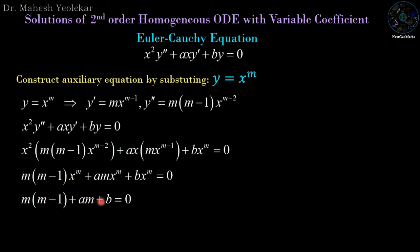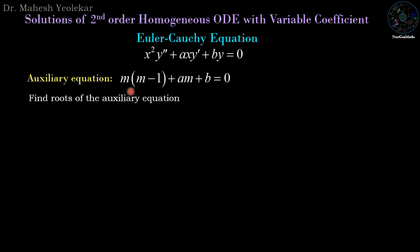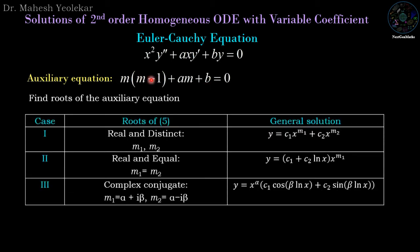This is called the auxiliary equation for the Euler-Cauchy equation. The roots of the auxiliary equation will help find the general solution. It is a quadratic equation, so we have three possibilities: first, the roots are real and distinct; second, roots are real and equal; and third, they may be complex conjugates.